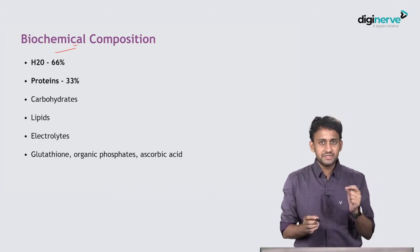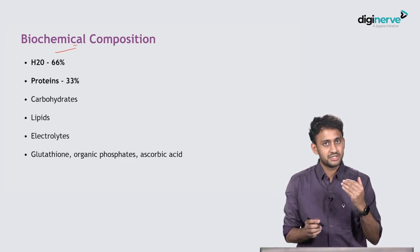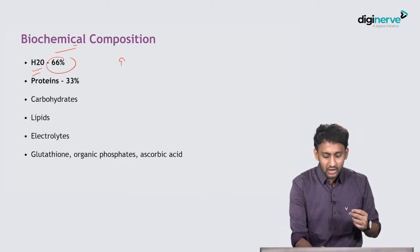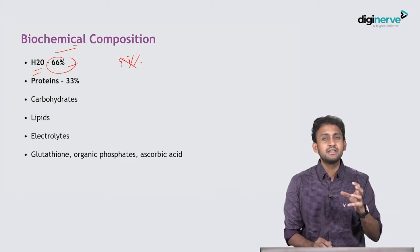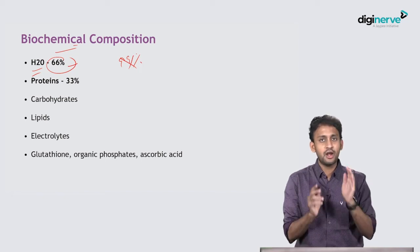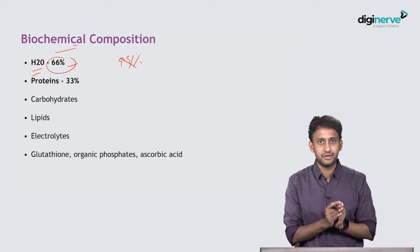As far as the composition of the lens is concerned, the most predominant composition is water, 66 percent. Not 99 percent, 66 percent, which means there is a relative dehydration of the lens. For a lens to be clear, there has to be this relative dehydration.